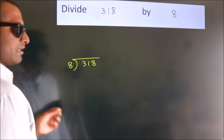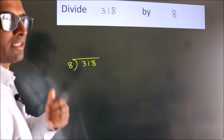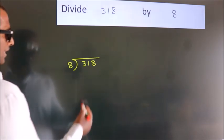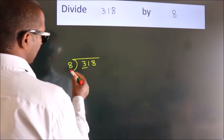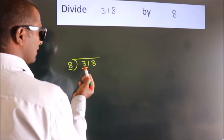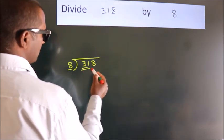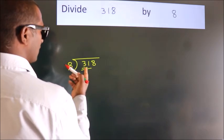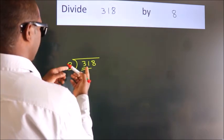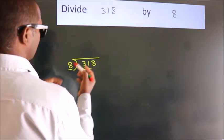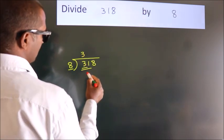This is your step 1. Next, here we have 3, here 8. 3 smaller than 8. So, we should take two numbers, 31. A number close to 31 in 8 table is 8 threes, 24.